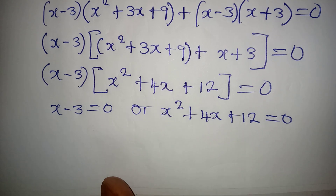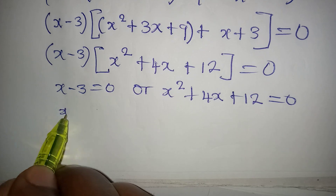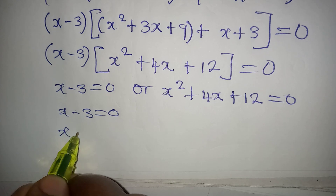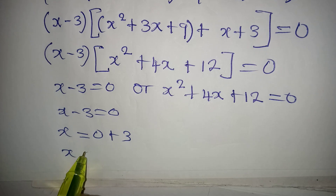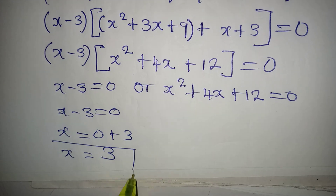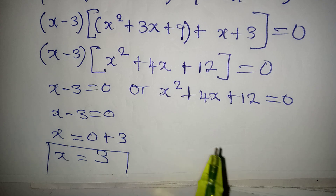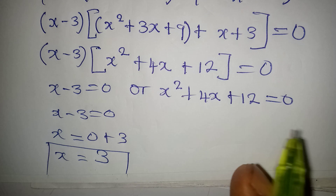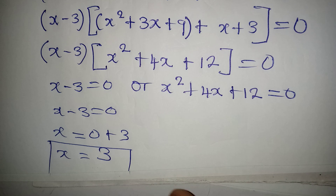Taking the linear equation first: x − 3 = 0 gives x = 3. This is the real solution. But the question says to solve completely, so we must also solve the quadratic equation to get two additional values of x.